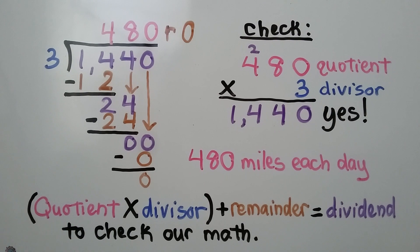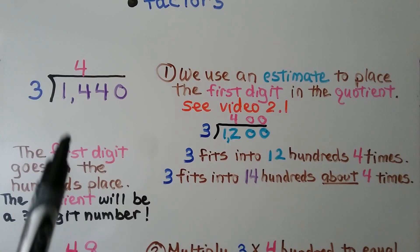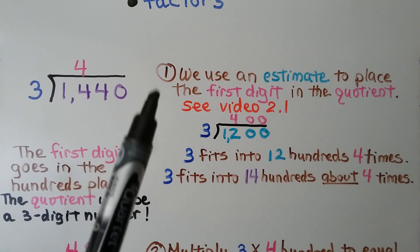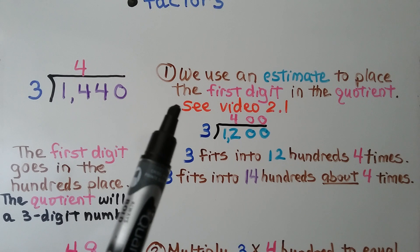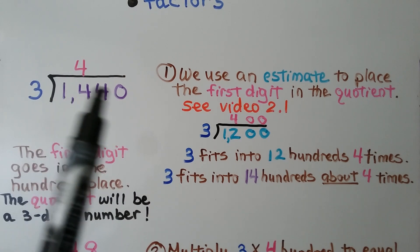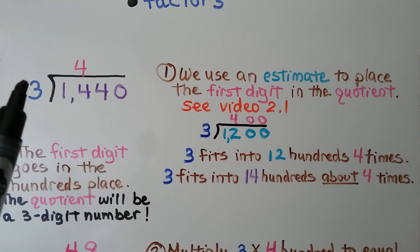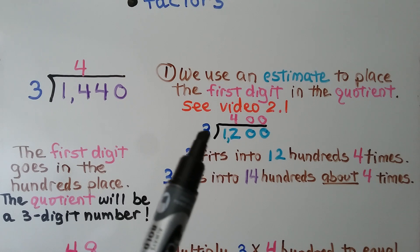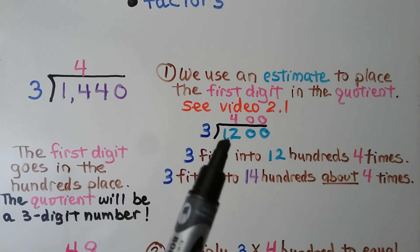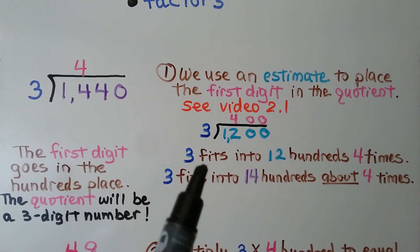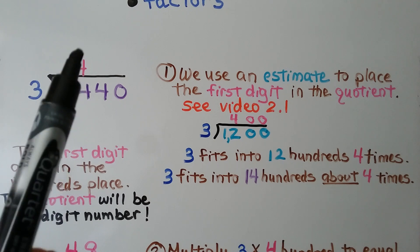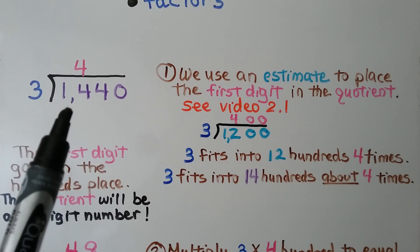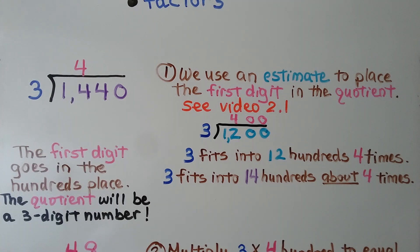Now let's go through this more slowly. Our problem is 1,440 divided by 3. First, we use an estimate to place the first digit in the quotient. We round to a compatible number: instead of 1,400, we use 1,200, and 3 fits into 1,200 four hundred times. So the first digit in the quotient is 4, placed in the hundreds place, and we know the quotient will be a three-digit number.